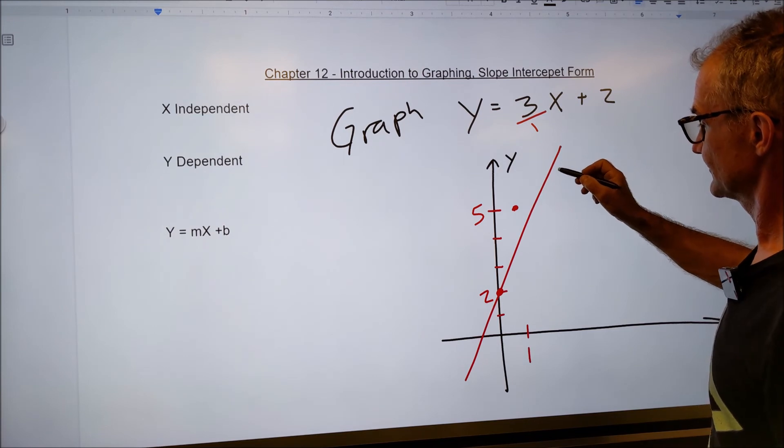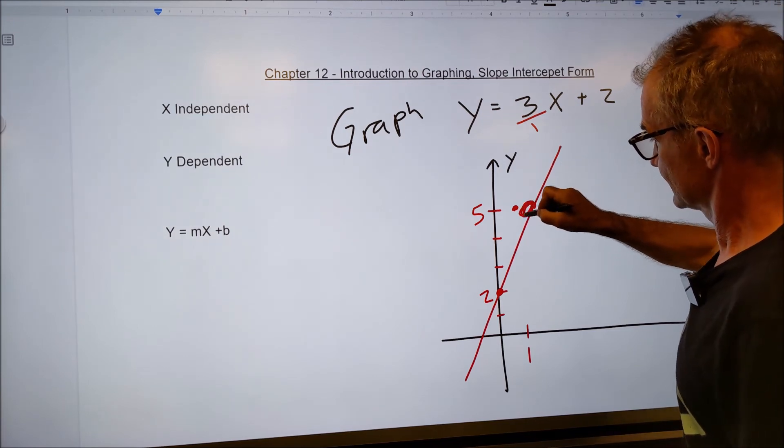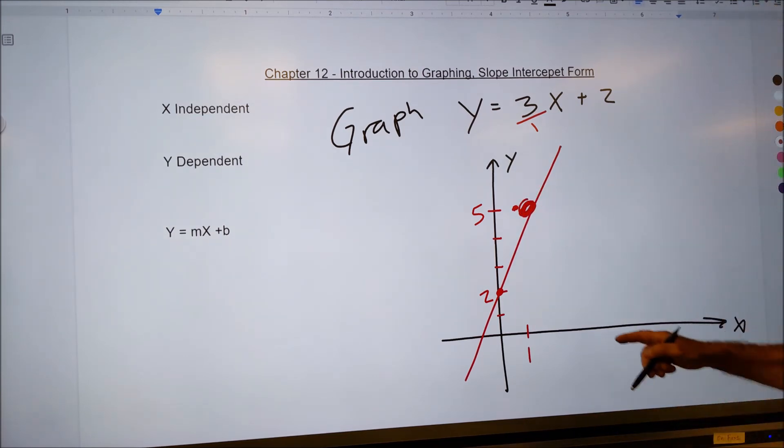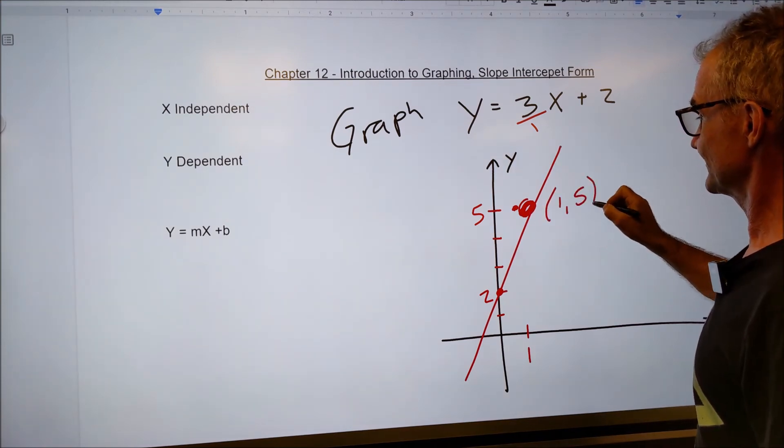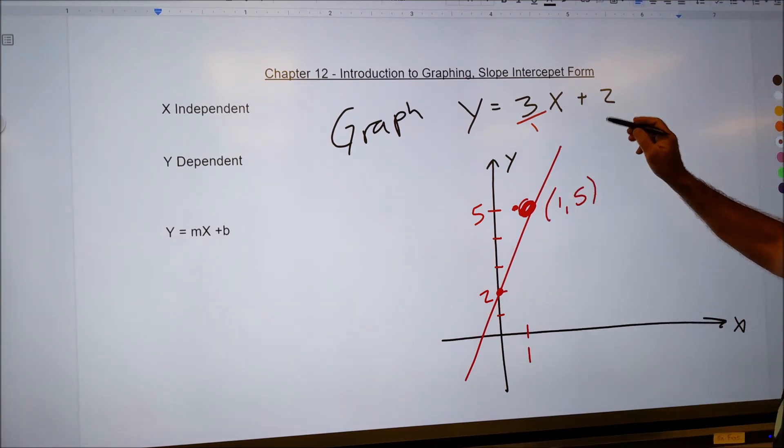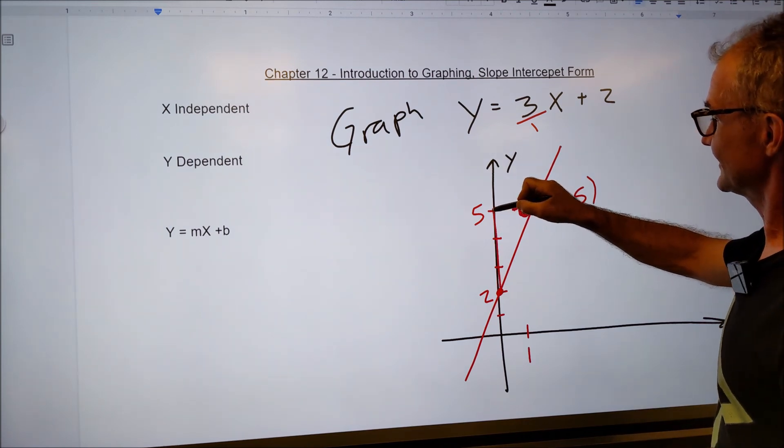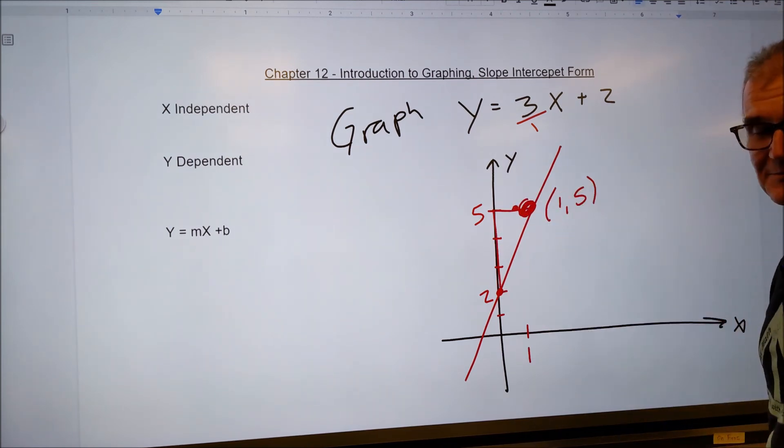Whoops, need a bigger dot. At one five. So this goes through the point one five. Y equals three x plus two. I rise three, run one, and it has a y-intercept at two. So that's given an equation, create the graph.